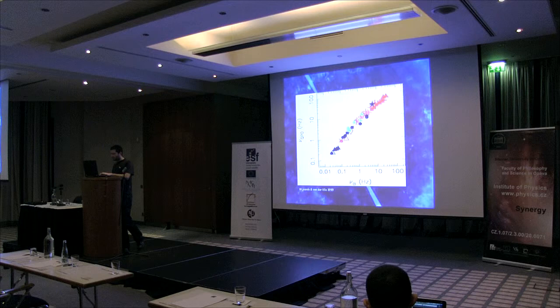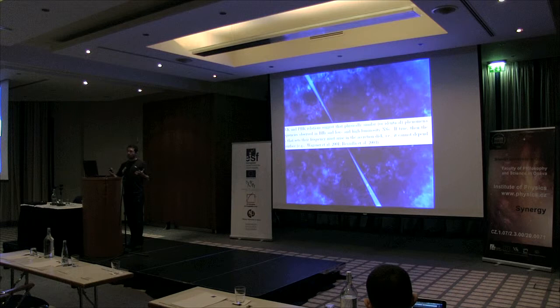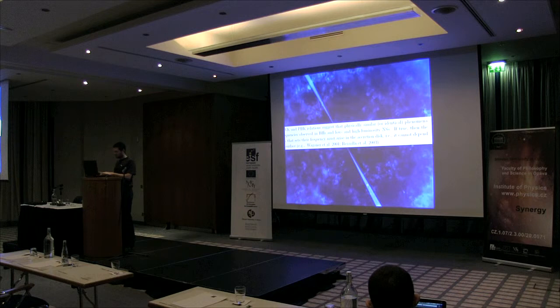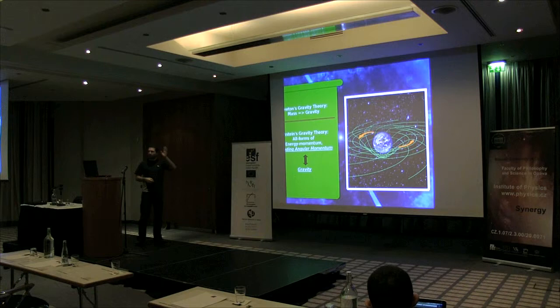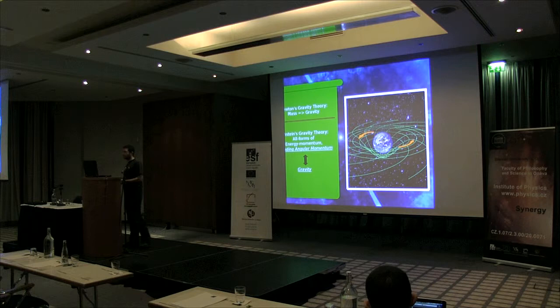The WK relation is quite tight, with different colors for different types of sources. If you assume these correlations are real and not by chance, it means the QPO frequencies we measure are produced by the same phenomena — whether in a black hole or a neutron star, whether the neutron star is bright or not, whether it is a pulsar or not. There is something fundamental here that can tell us about the compact object.